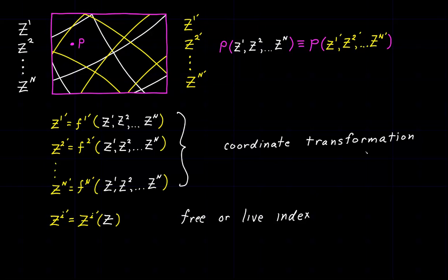What we have here is a coordinate transformation. If we know the unprimed coordinates, we can substitute them in and compute the primed coordinates — we can transform from the unprimed system to the primed system. What if we need to go the other way? We'd need expressions that do just the opposite — something like Z^k being equal to a function Z^k with the argument of the Z-prime coordinates, represented as Z with a prime symbol. This would be what we call an inverse transformation.